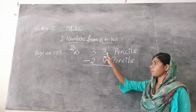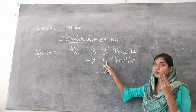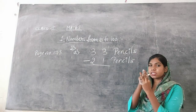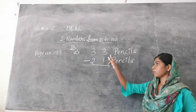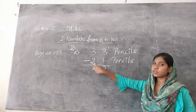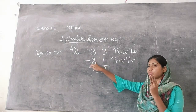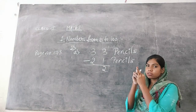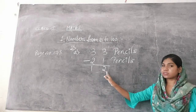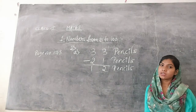So subtract 21 from 33. In the ones place: 3 minus 1. Hold 3 fingers, remove 1 — 2 fingers remain. So 3 minus 1 is 2. In the tens place: 3 minus 2. Hold 3 fingers, remove 2 — 1 finger remains. So 3 minus 2 is 1. The answer is 12. So 12 pencils are remaining with Anjit.